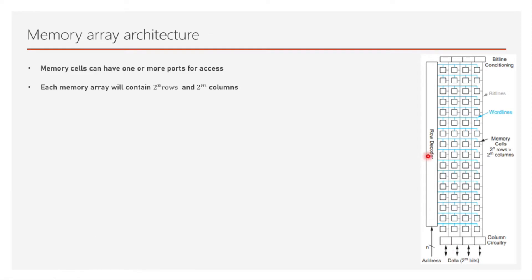There is a row decoder over here and there is bit line conditioning over here. We will discuss about bit line conditioning in further videos where we will discuss about single SRAM cell, why bit line conditioning is actually needed and how it is implemented as well.